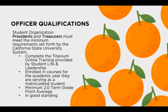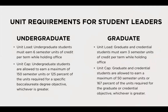Presidents and treasurers must meet the following minimum qualifications in order to serve in their leadership roles: completion of an online training in Titanium, be registered for the term in which they're serving as president or treasurer, have a minimum 2.0 term GPA, and be a student in good standing and not on probation of any sort. Undergraduate student leaders must be enrolled in at least six units each semester and not earn more than 150 units, or 167 of the units required for their degree. Graduate student leaders must be enrolled in at least three units each semester and not earn more than 50 units, or 167 of the units required for their degree.